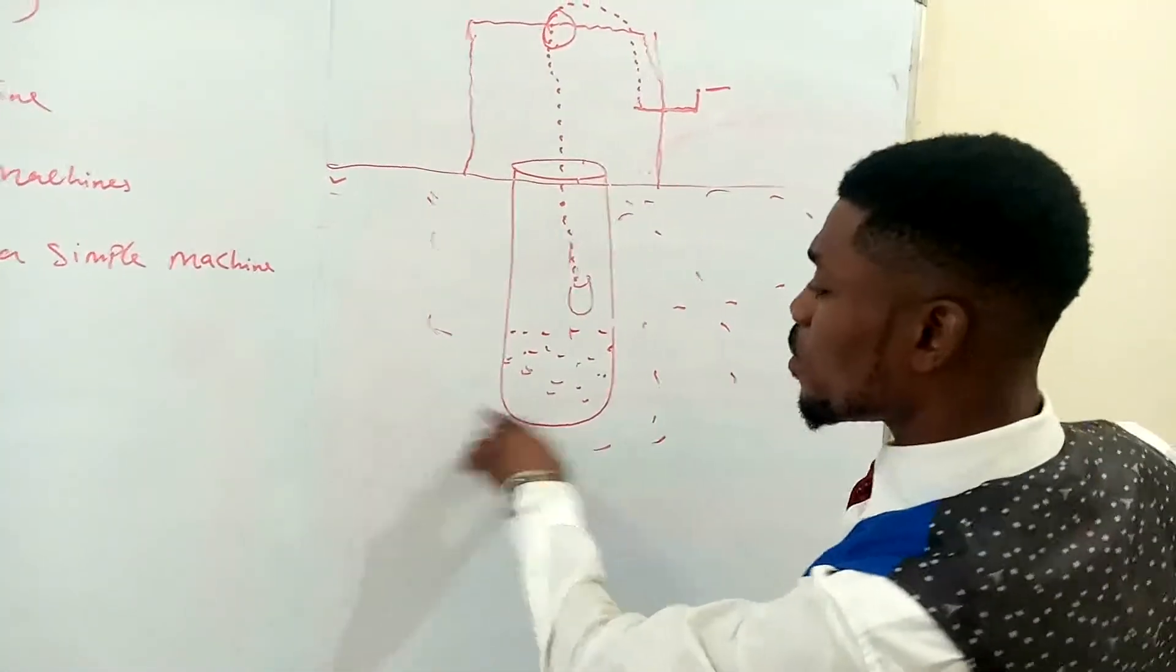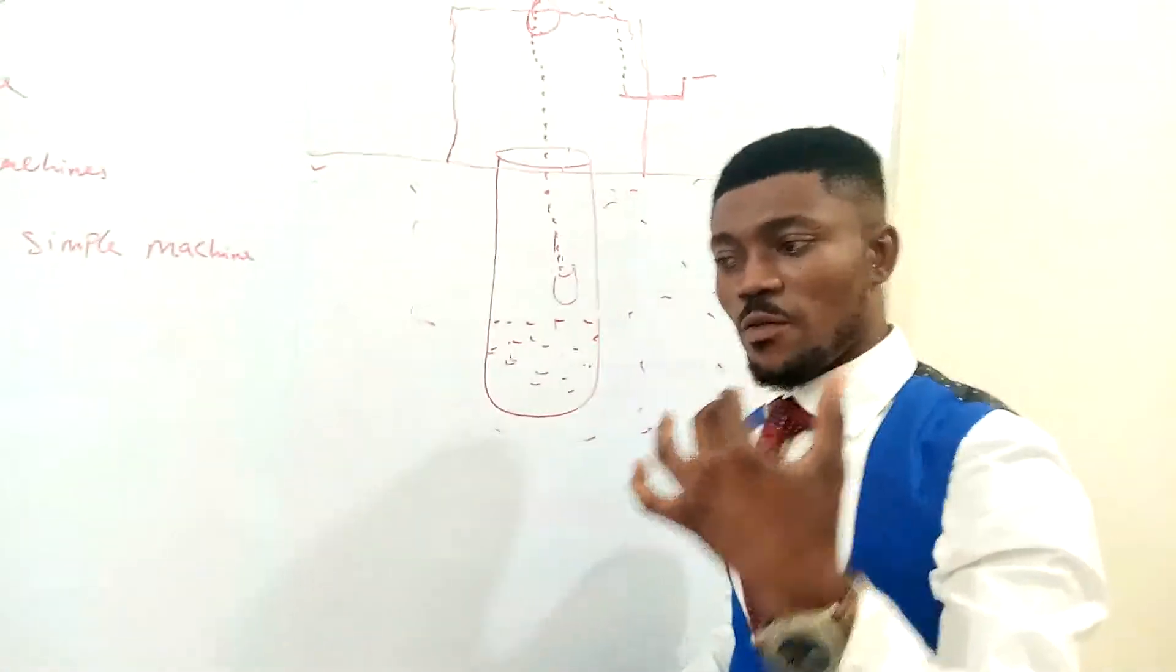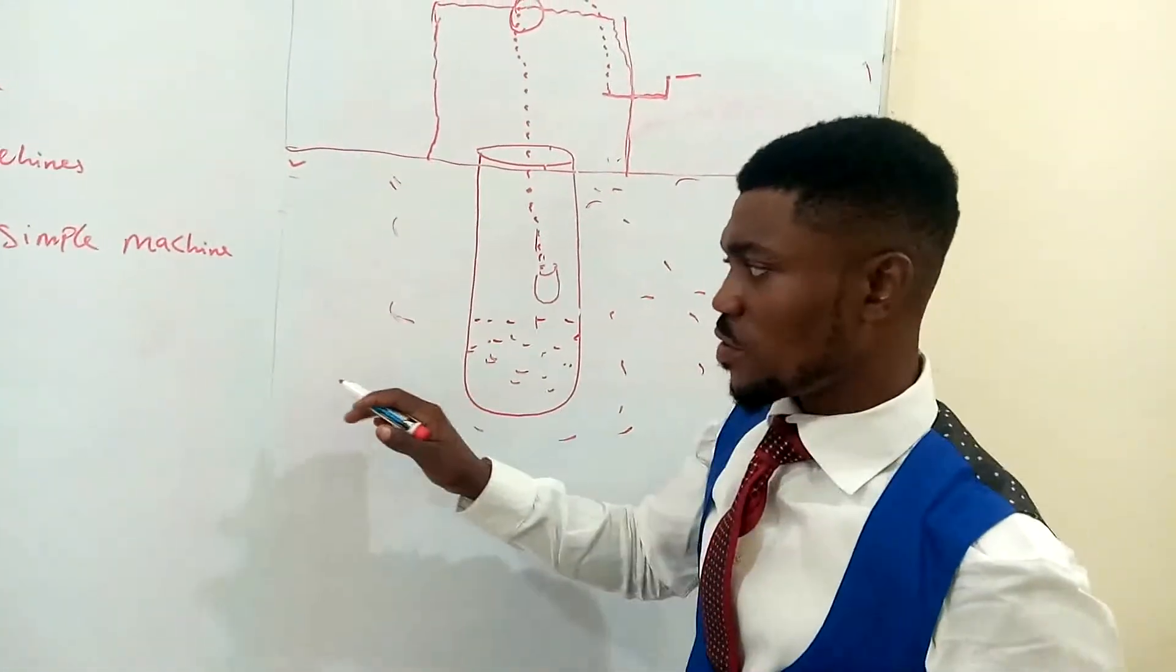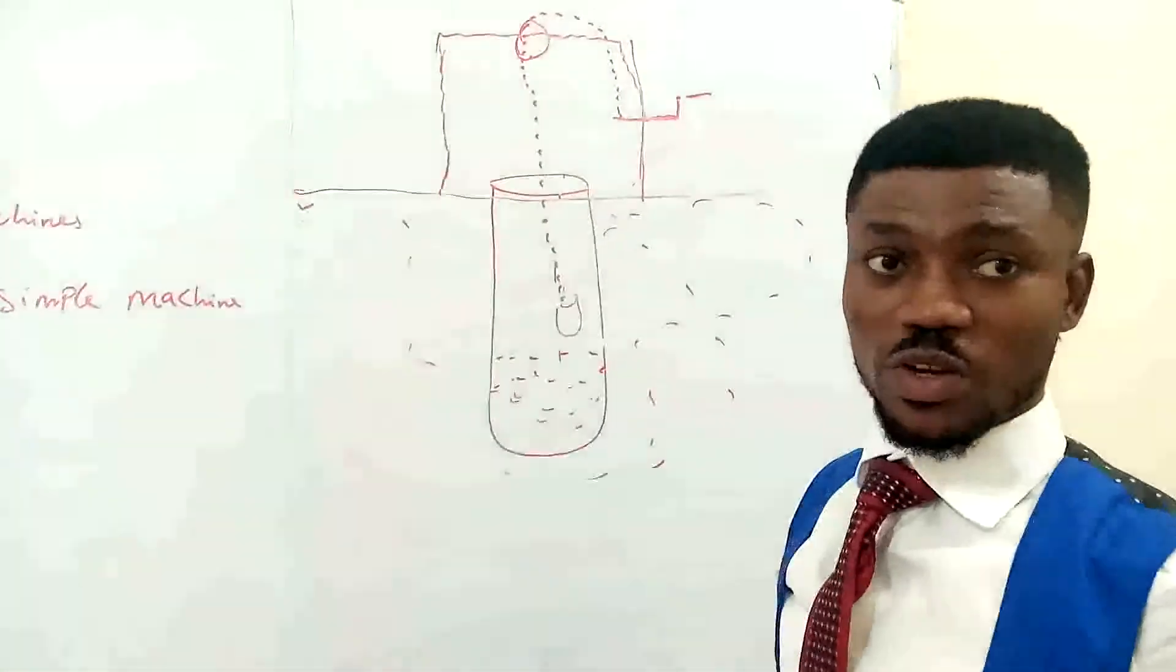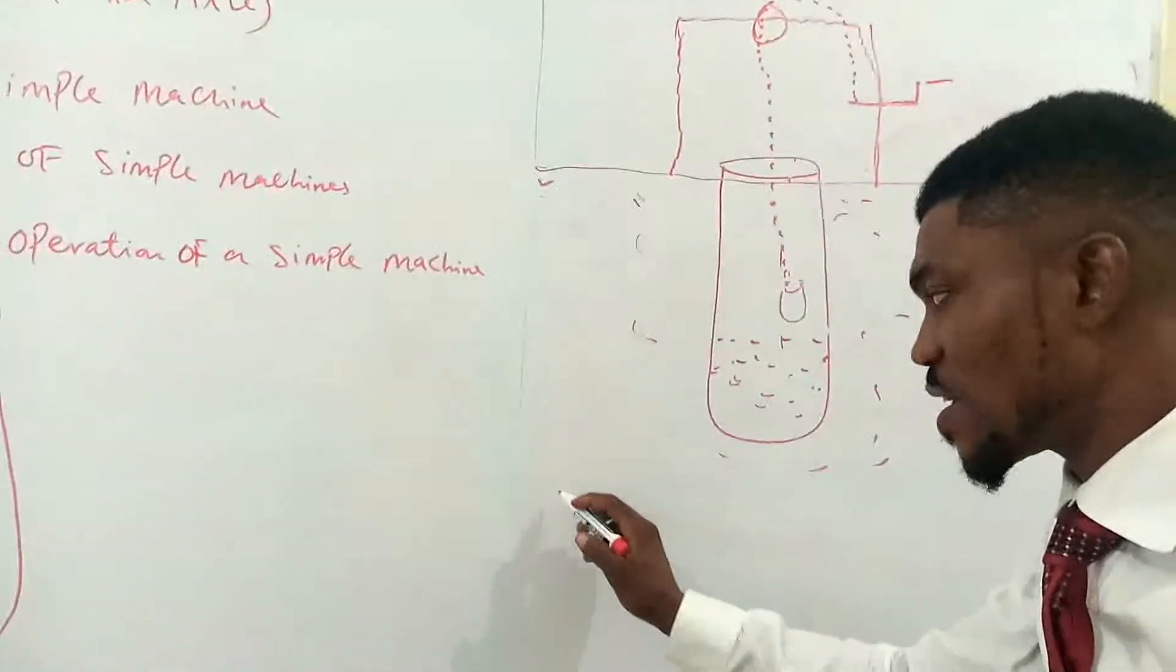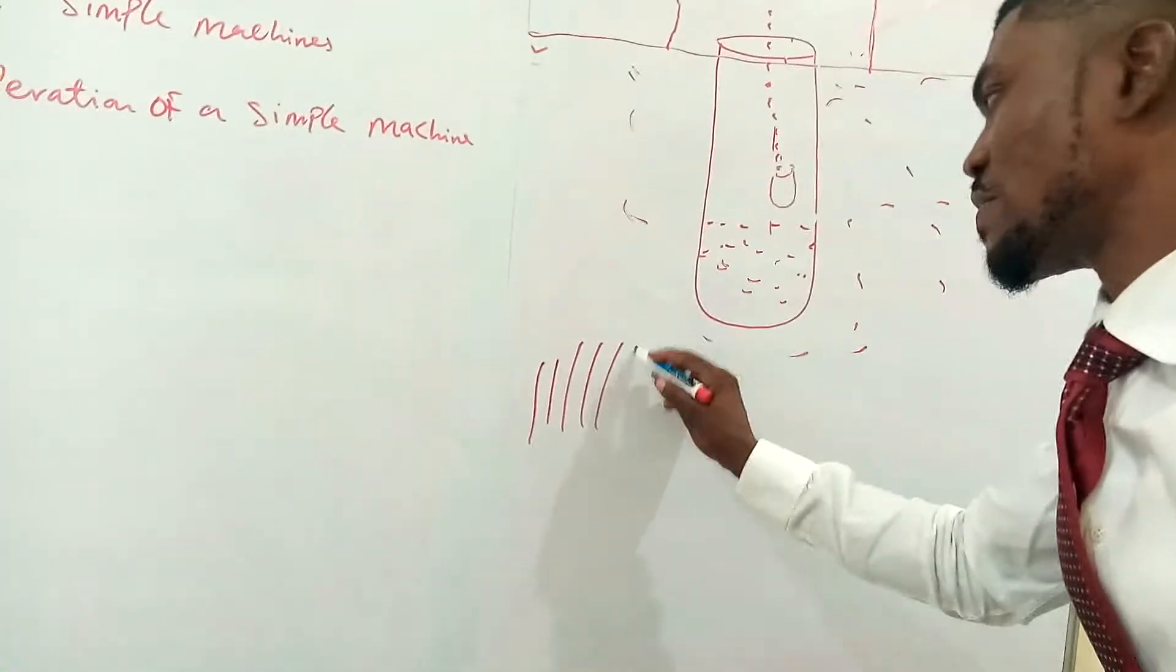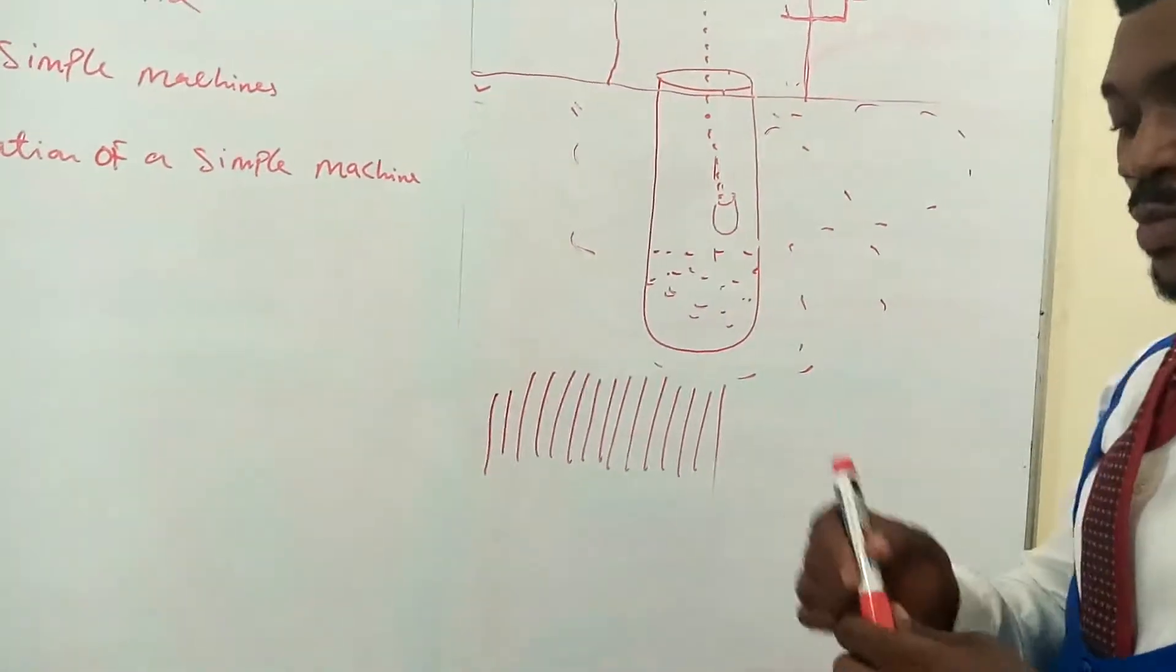We also have another example with calculations. When you were in the primary section, you were asked to do your counting, say 1 plus 1 equals 2, 10 plus 5 equals 15. But you were asked to use your counting sticks or your bottle counter. Counting sticks like this: 1, 2, 3, 4, 5, 6, 7, 8, 9, 10, 11, 12, 13, 14, 15.